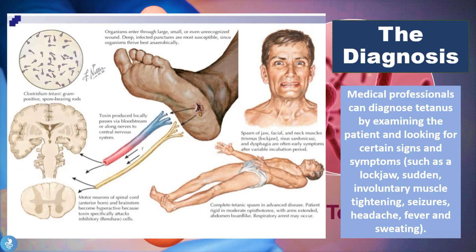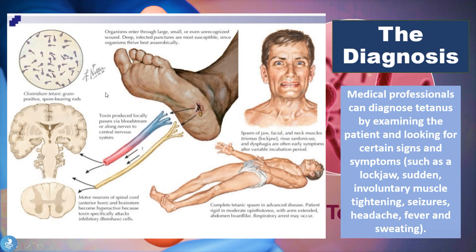Medical professionals can diagnose tetanus by examining the patient and looking for certain signs and symptoms such as locked jaw, sudden involuntary muscle tightening, seizures, headaches, fever, and sweating. The diagnosis is usually a clinical one based on the typical presentation. These patients will have jaw spasms, a distinct shocked facial appearance, dysphagia, and can have complete titanic spasms throughout the entire body, with arms stretched and curvature of the body. In these cases, respiratory arrest may occur as the chest muscles tighten.